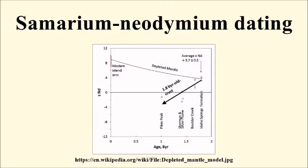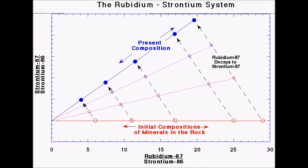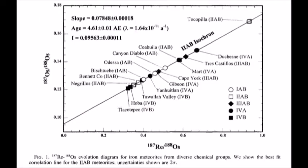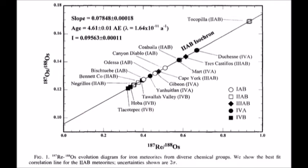These are great, but there also exists samarium-neodymium, rubidium-strontium, uranium-thorium, and rhenium-osmium dating, as well as a host of other radiometric methods.